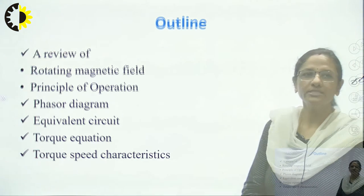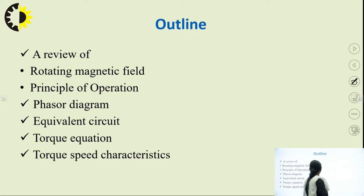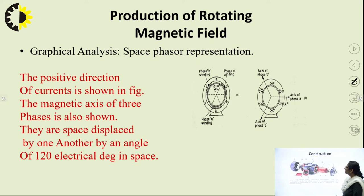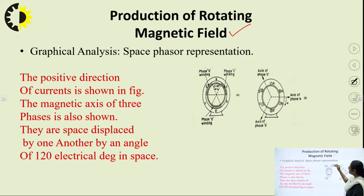The outline of this lecture is as follows: a review of the rotating magnetic field and principle of operation of the 3-phase induction motor, then the Phasor Diagram, Equivalent Circuit, Torque Equation, followed by the Torque Speed Characteristic of the motor. Since the principle of operation of a 3-phase induction motor is based upon the production of the rotating magnetic field, I need to give an overview of this before going into the details of the motor.